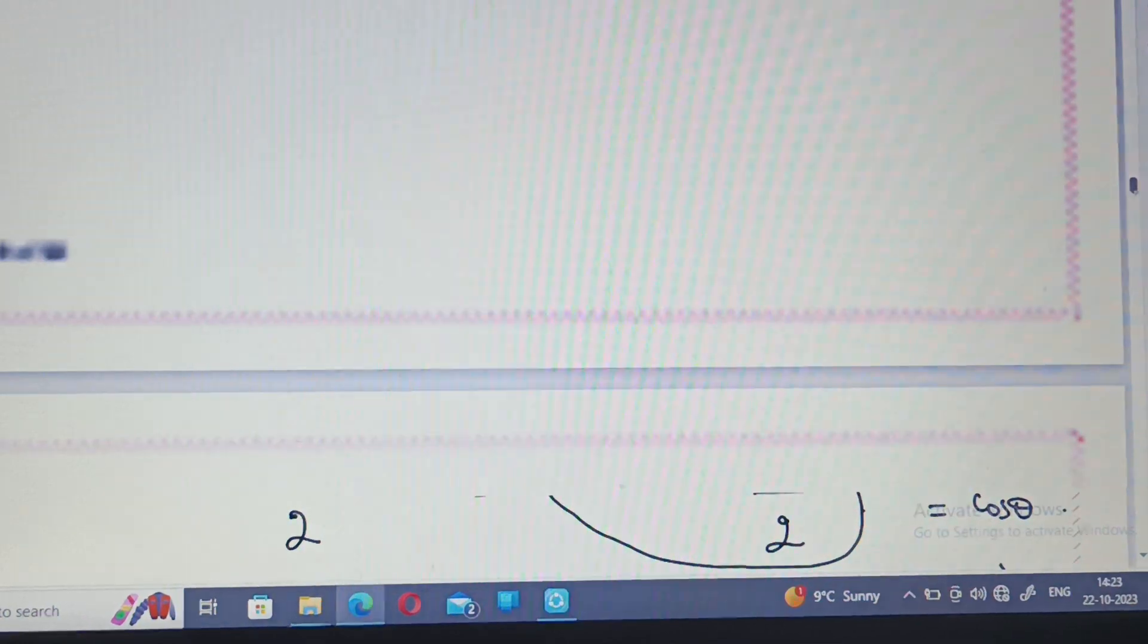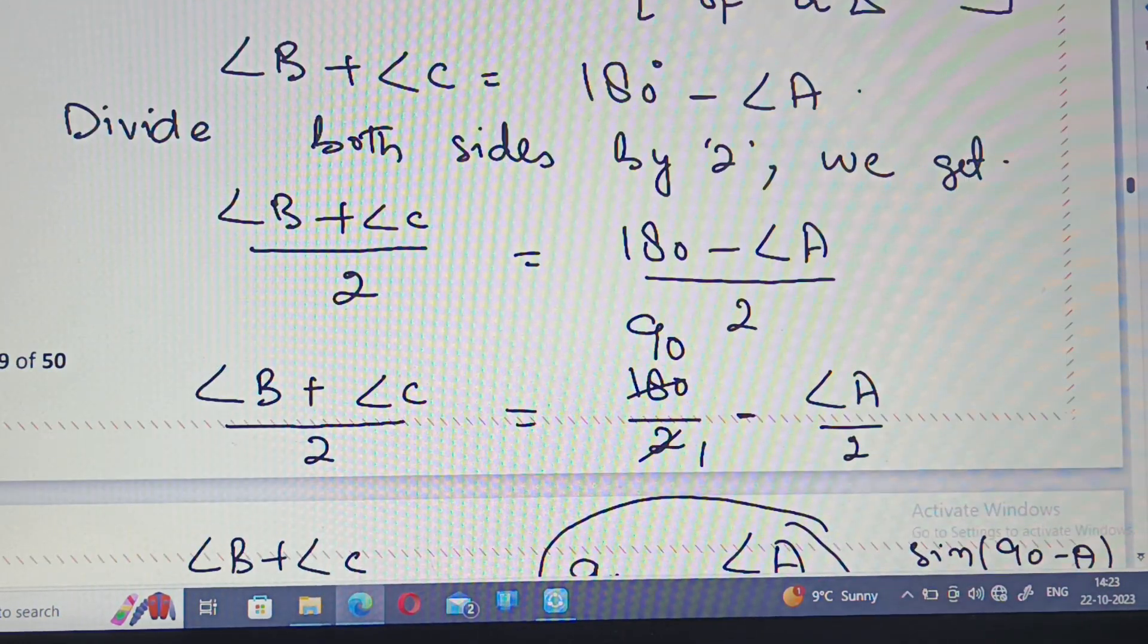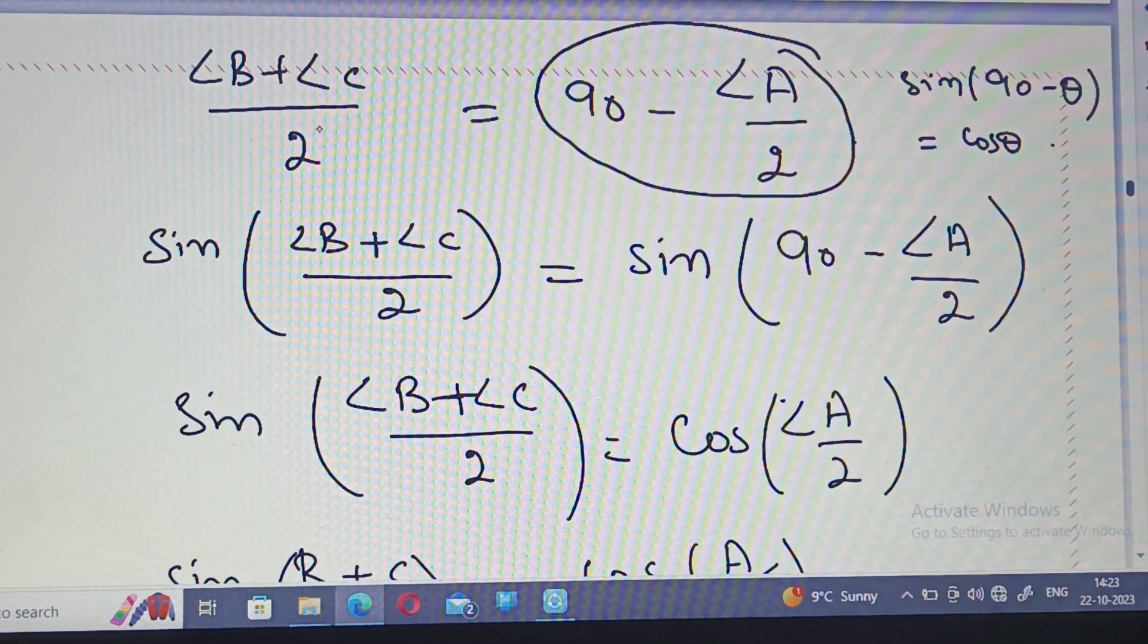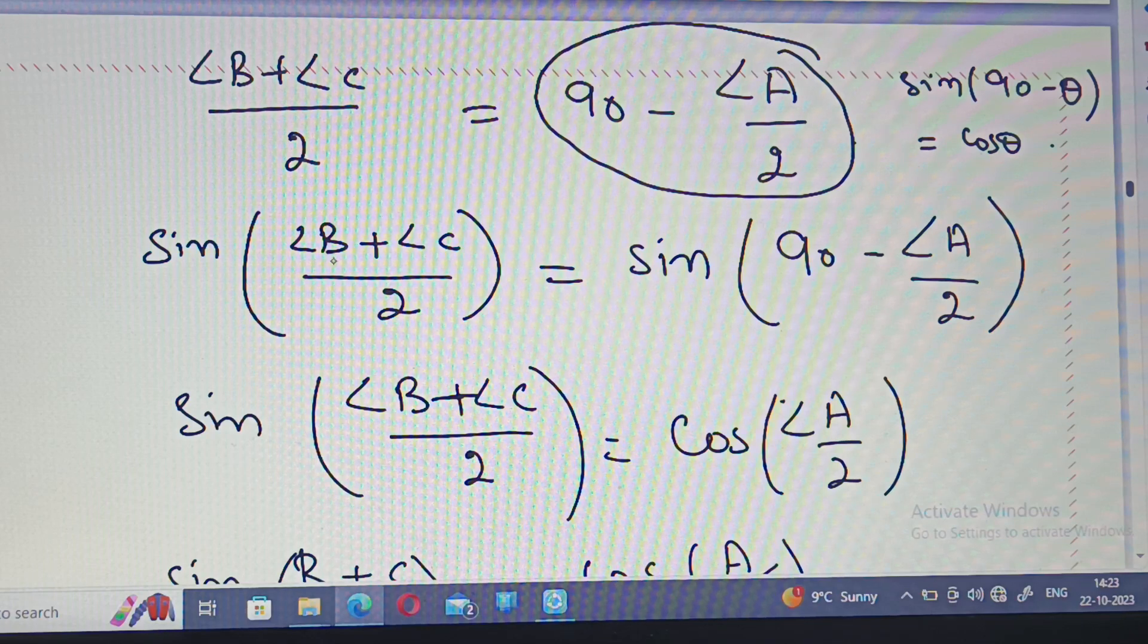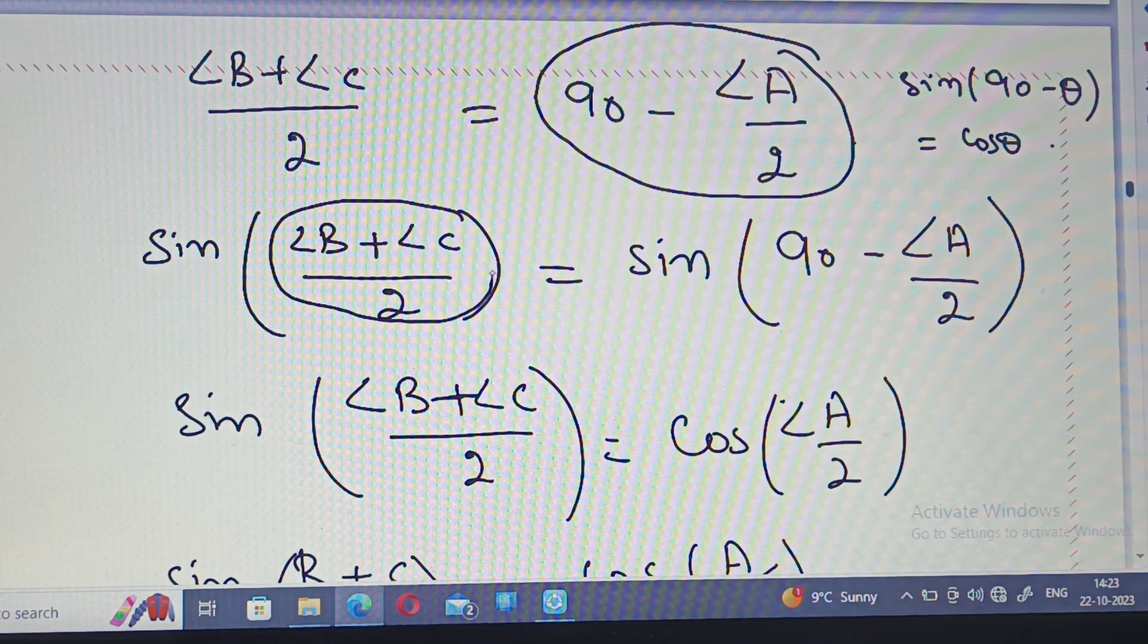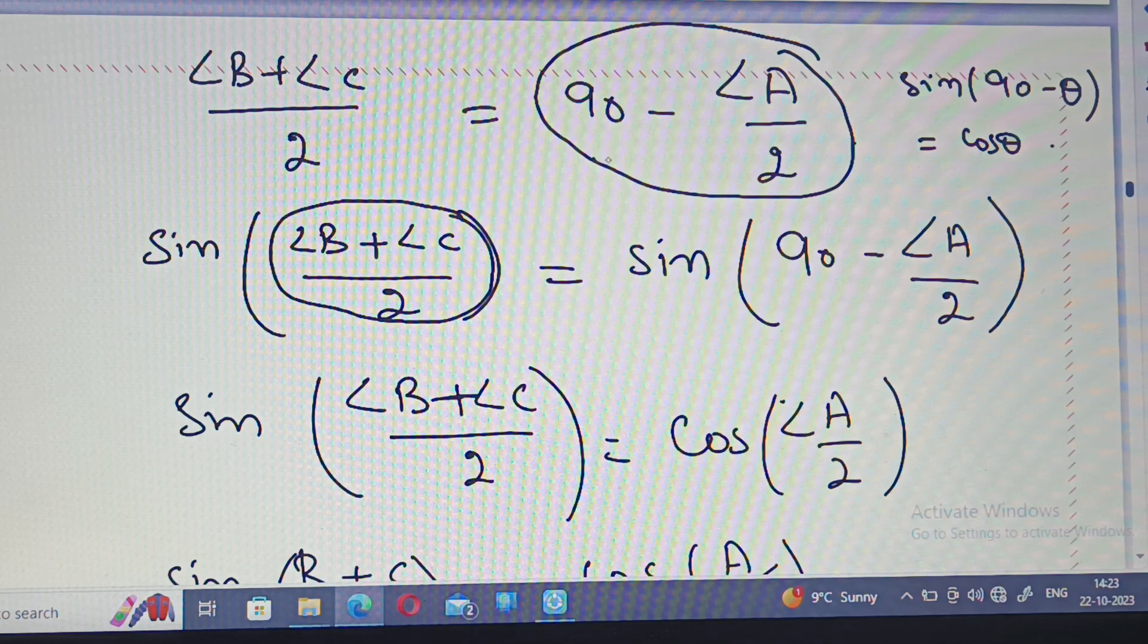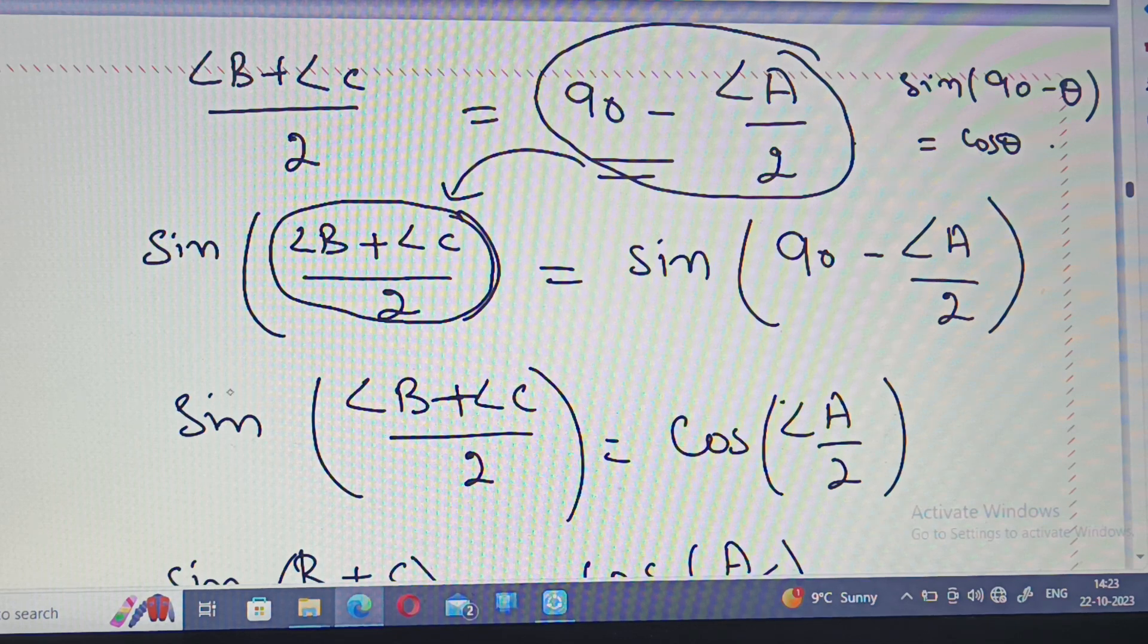Here, sine of B plus C divided by 2 is equal to cos A upon 2. The sine on the left side value is equal to the value on the right side.